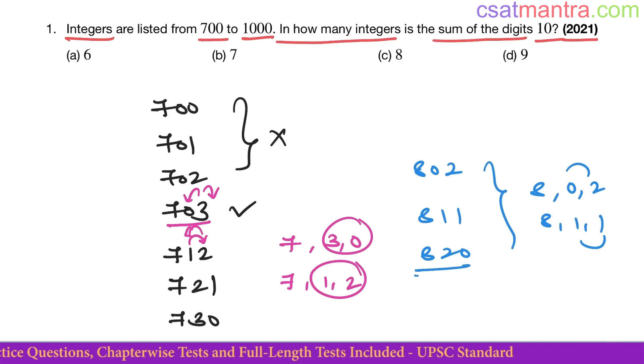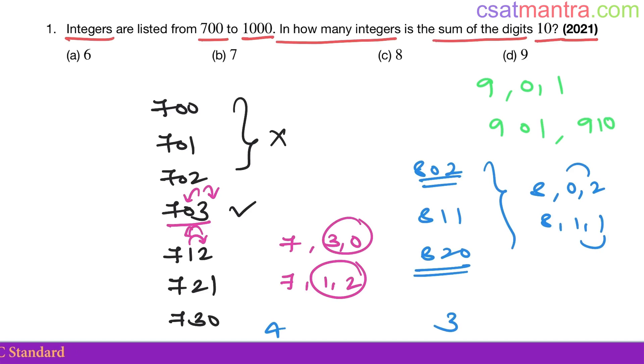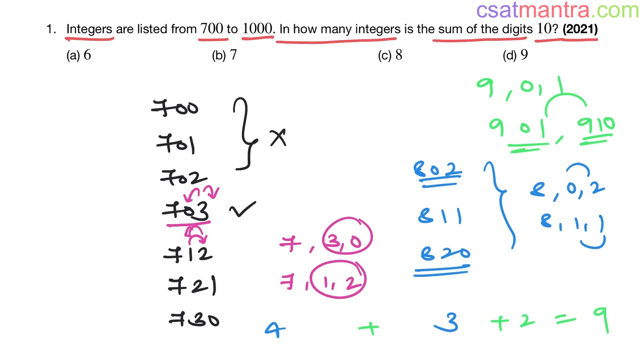Here 20, 802. So here 4, here 3. Now 901, okay, this is the only way to get 10. So 901, 910. So 4 plus 3 plus 2 equals 9. Our answer is d. Very easy question.